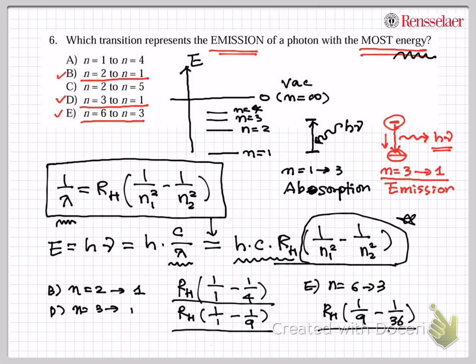So whichever this number that you calculate is the highest will be the most energy. And this one, when you calculate that, this number is about 0.75, and this is about 0.89, and this is about 0.083. So this is the one with essentially the highest energy for the emitted light. So therefore, the answer will be here, will be D.